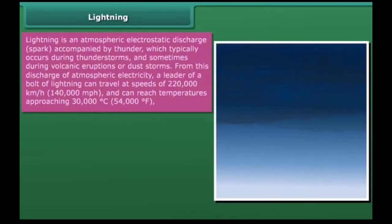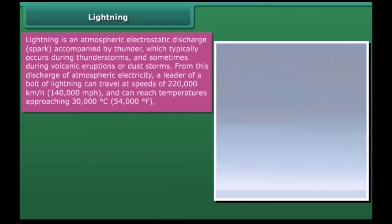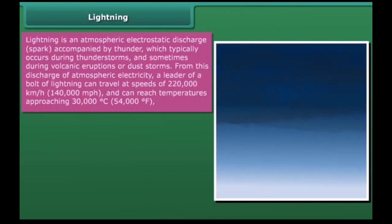Lightning. Lightning is an atmospheric electrostatic discharge spark accompanied by thunder, which typically occurs during thunderstorms and sometimes during volcanic eruptions or dust storms. From this discharge of atmospheric electricity, a leader of a bolt of lightning can travel at speeds of 220,000 km per hour and can reach temperatures approaching 30,000 degrees Celsius, that is 54,000 Fahrenheit.